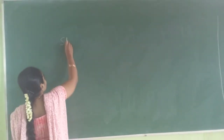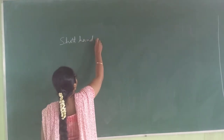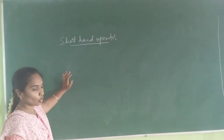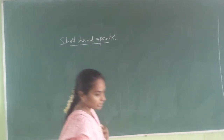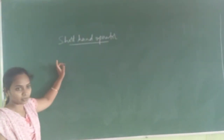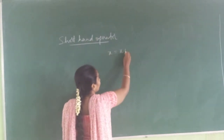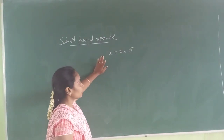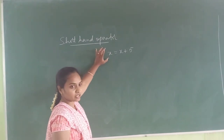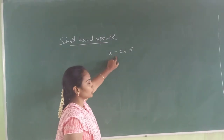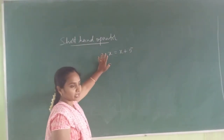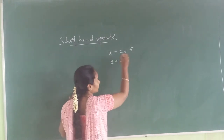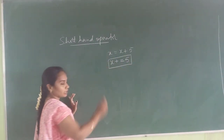The next topic is the shorthand operator. The name itself tells you — shorthand means if you have any expression, suppose x = x + 5, this is an expression. To reduce the length of this expression, we make use of the shorthand operator. Using shorthand, we write it as x += 5. This is the method of writing using shorthand operators.